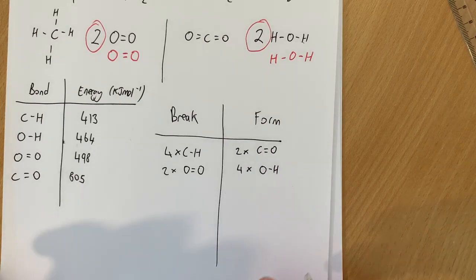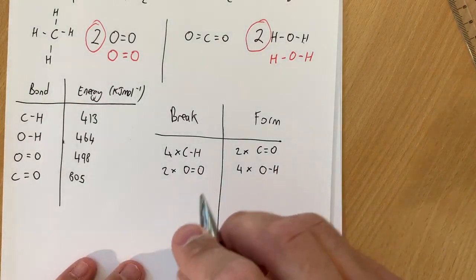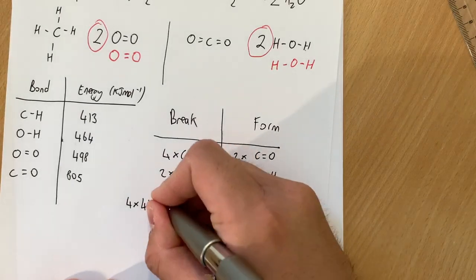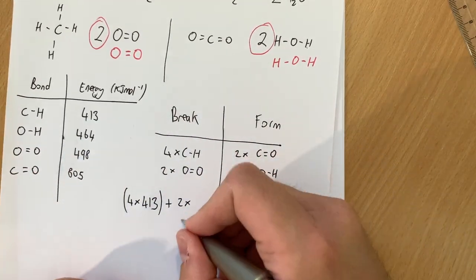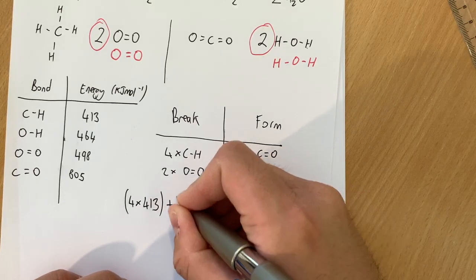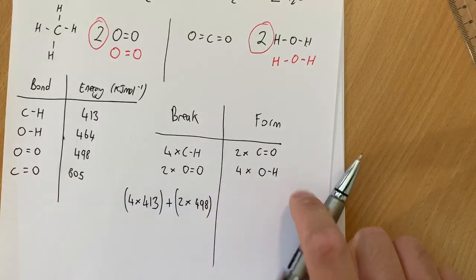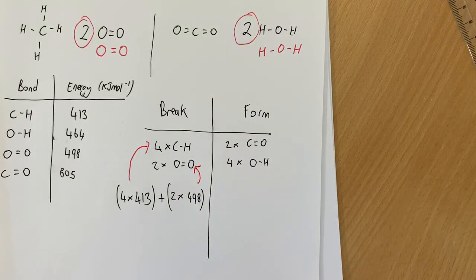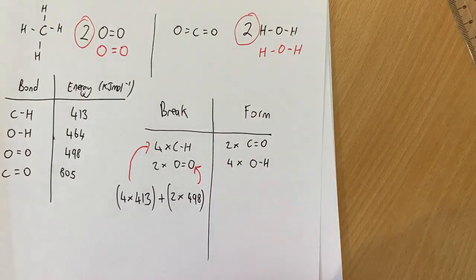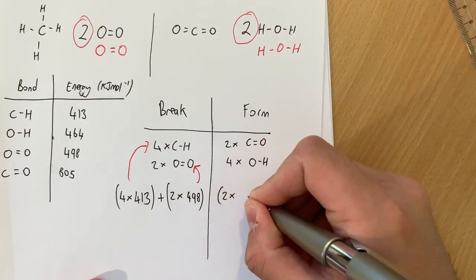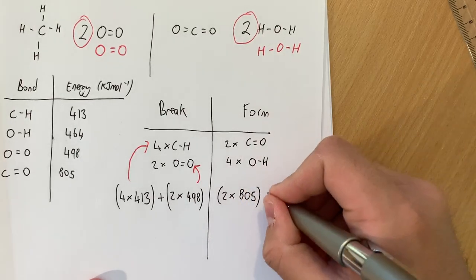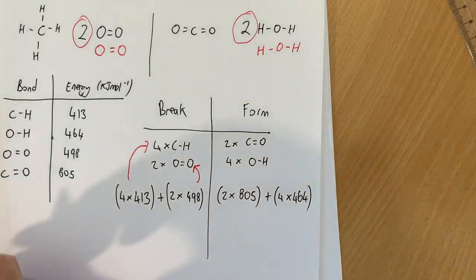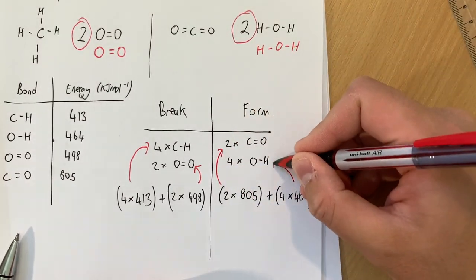Okay so what I'm going to do is go back to my table of data. I'm going to put that into here. So I've got 4 lots of 413 from the C-H plus 2 lots of the O double bond O, 498. Now I tend to put brackets in there because that lets me see that this bit belongs to here and this bit belongs to here. So I can keep an eye on exactly what's going on. Over here 2 lots of C double bond O, so that is 2 lots of 805. And here we've got 4 lots of the O-H which is 464.